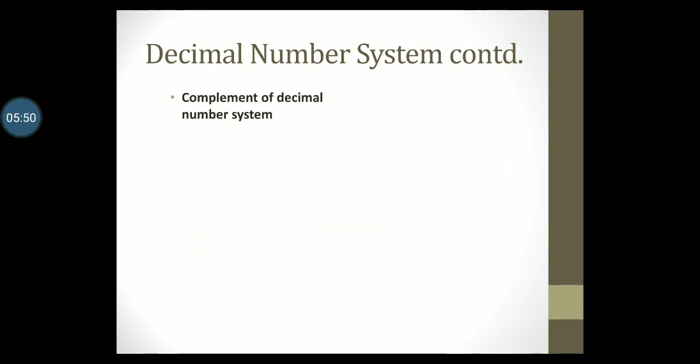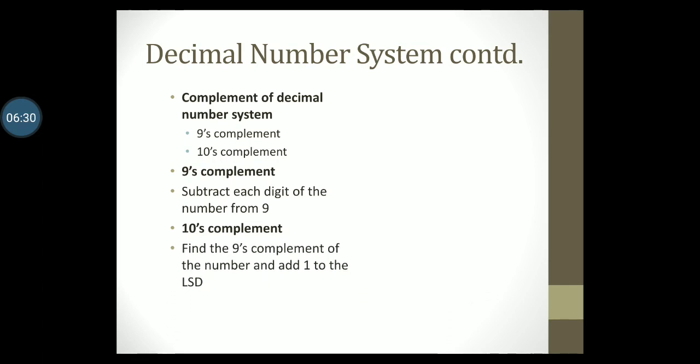Also, in the decimal number system, there is something called complement. There are two types of complements: 9's complement and 10's complement, both associated with the decimal number system. How do you find the 9's complement of a decimal number? Similarly, how do you find the 10's complement of a decimal number? You find the 9's complement of the number and then add 1 to the LSD.